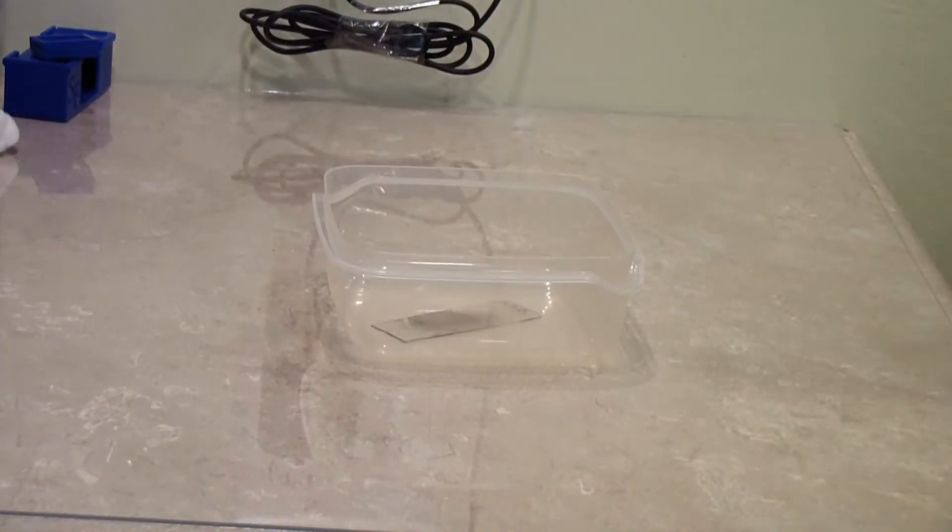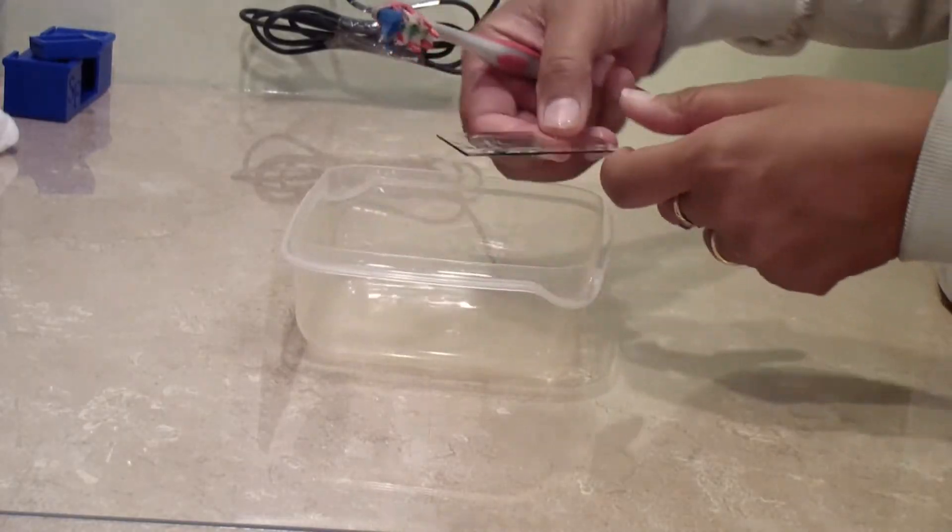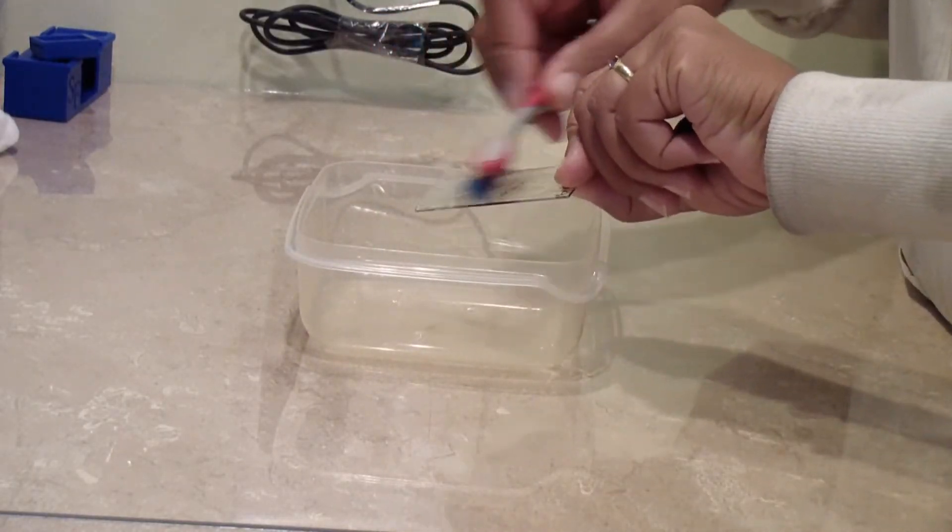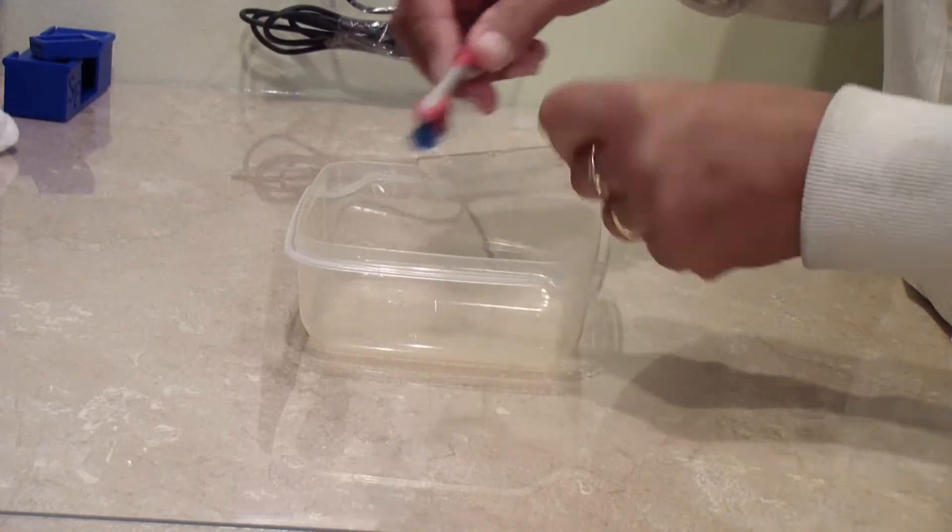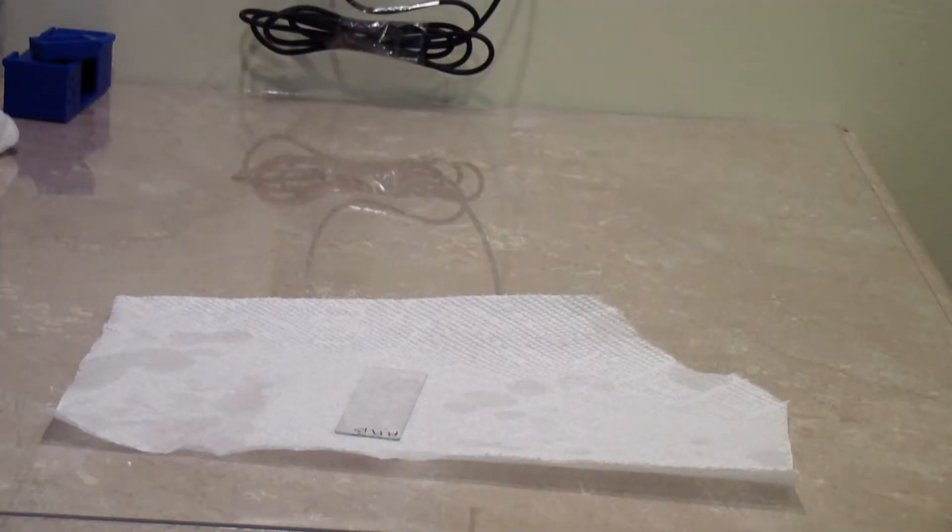Be sure to wait until the slide is cool before you touch it. Once it is cooled off, you can wash the slide by scrubbing it with dish soap and an old toothbrush. Rinse the slide with water and allow to air dry on a paper towel. You can then put it back in the slide box, ready for your next adventure.